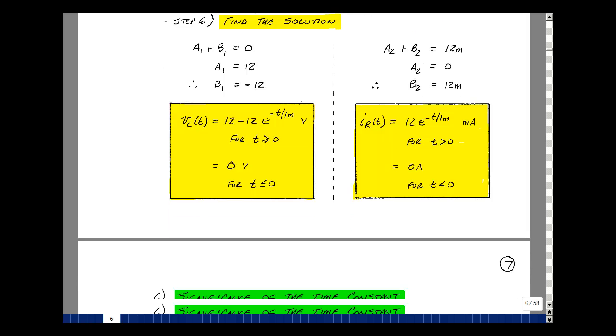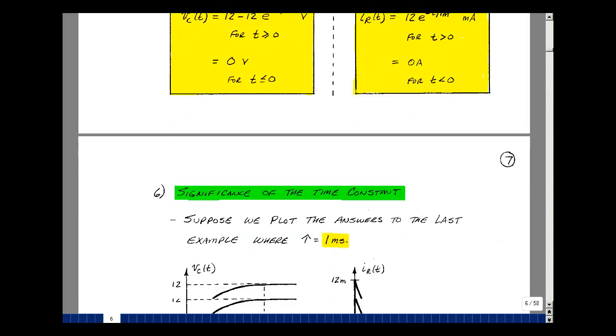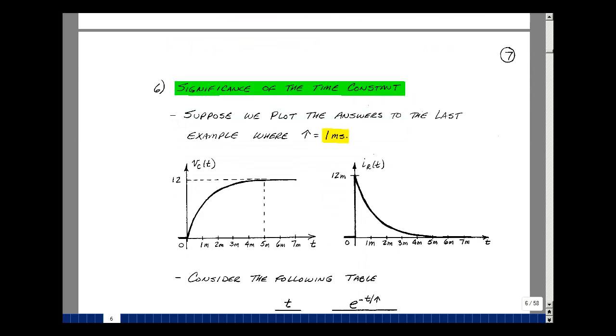Now let's sketch these two equations. My current equation, we just said it started out at 0, and then jumps to 12 milliamps, and then that exponential eventually goes back to 0. With the capacitance, I started out at 0 volts, and eventually I'll get to 12 volts. When sketching this, you can see that I got very close to 12 volts, somewhere in this range of 5 milliseconds or later. And likewise here, I'm seeing that the current in the resistance is really very small after maybe 5 or more milliseconds.